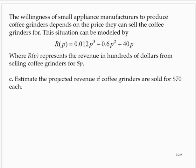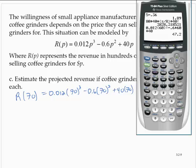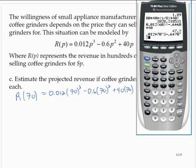Part c: Estimate the projected revenue if coffee grinders are sold for $70 each. So then the revenue of 70 would be 0.012 times 70 cubed minus 0.6 times 70 squared plus 40 times 70, which equals 3,976.